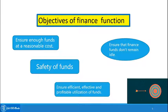The first objective is to ensure enough funds at a reasonable cost. As a business, the promoter or owner always intends to reduce costs. While arranging funds from outside, the business has to ensure that the cost of arranging those funds is the least. We will understand what this means in the slides to come.